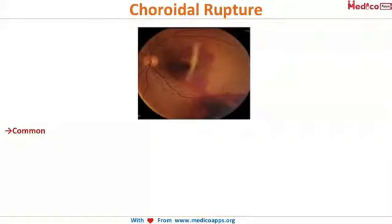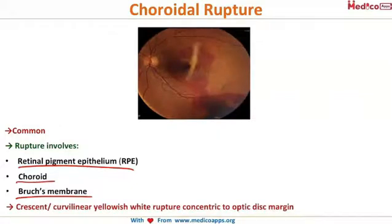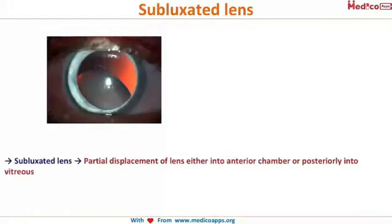Now, choroidal rupture involves three layers: the retinal pigment epithelium, the choroid, and Bruch's membrane — all three are ruptured together. It appears as a crescent or curvilinear yellowish-white rupture concentric to the optic disc margin, which is what you can see in this picture.